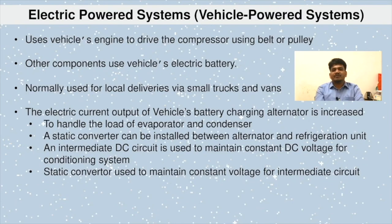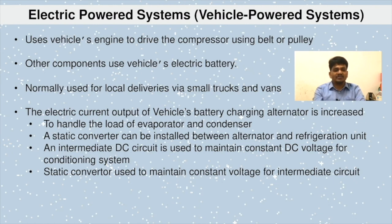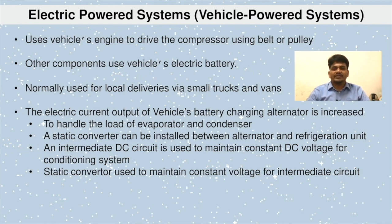For the electric powered system, vehicle-powered systems use the vehicle's engine to drive the compressor using a belt or pulley. Other components use the vehicle's electrical battery, and this is normally used for local delivery via small trucks and vans. The electric current output of the vehicle battery charging alternator is increased to enhance the load of the evaporator and condenser. A static converter can be installed between the alternator and refrigeration unit, and an intermediate DC circuit is used to maintain constant DC voltage for the conditioning system.